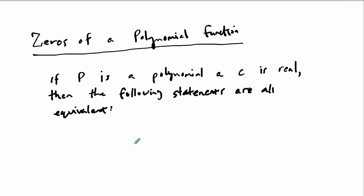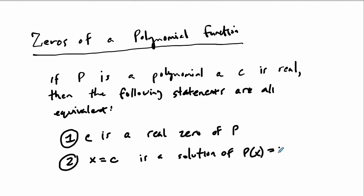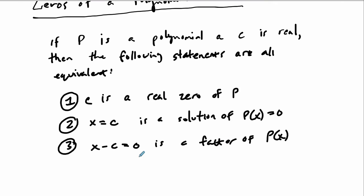If C is a real zero of the polynomial, that's the first way to say it. Another way is that X equals C is a solution of P(X) = 0 — if you plug in C you get an output of zero. That also means X minus C is a factor of the polynomial, based on the factor theorem.